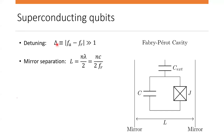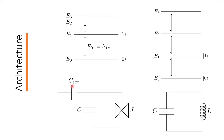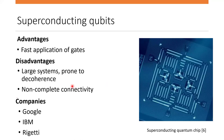Apart from measurement, we also need to implement universal quantum gates on the qubit. To do that, we simply shine a photon with frequency fa with a specific phase. By choosing the appropriate phase of the photon, we can implement X and Y rotation gates. Additionally, two-qubit gates are implemented by taking advantage of the external capacitor.